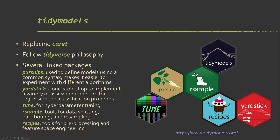Tidy models uses similar syntax to packages like dplyr and ggplot2. It's a set of packages with different uses within the ecosystem. For example, parsnip is used to define models using common syntax and experiment with different algorithms. Yardstick applies model validation and assessment metrics. Tune is for hyperparameter tuning. rsample sets up training and validation splits or folds for cross-validation. Recipes allows you to create workflows and pre-processing chains. I'll still show caret initially because it's really matured and easy to use, but eventually it will be replaced by tidy models — there are example modules with real data and code for tidy models included later in the course.